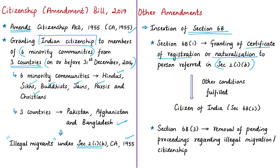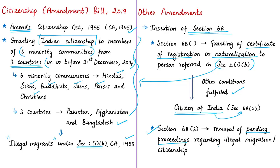If the required conditions are fulfilled and the certificate is granted, the person is deemed to be a citizen of India from the date of his entry into India, as per Section 6B clause 2. Additionally, Section 6B clause 3 provides for removal of any pending proceedings against a person in respect of illegal migration or citizenship.